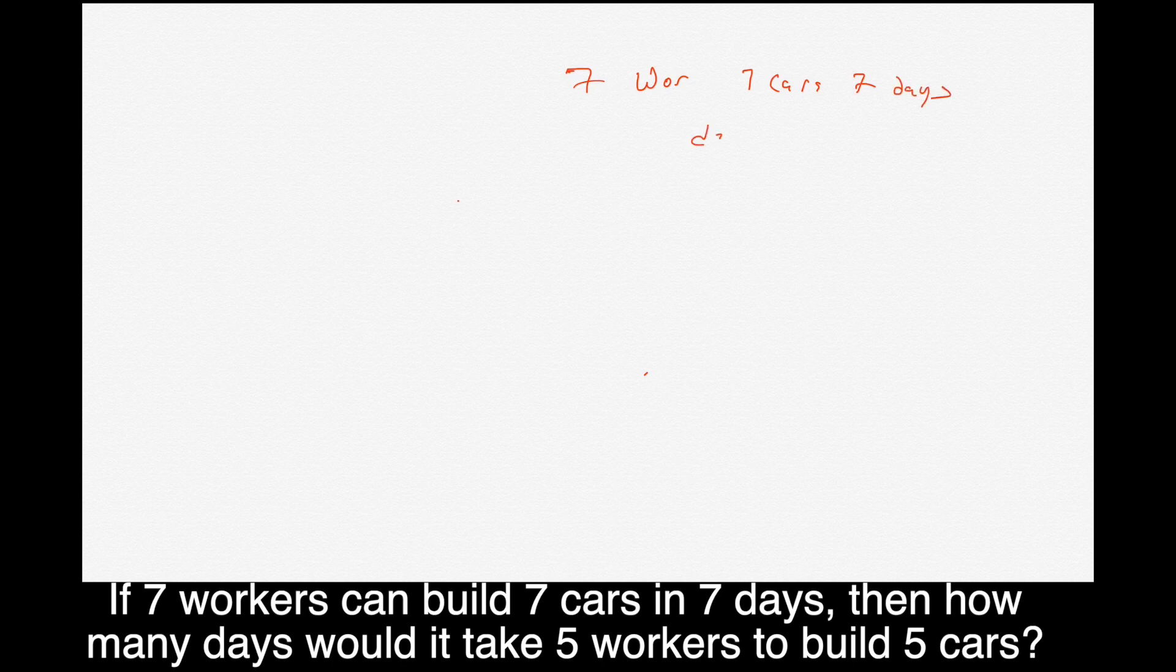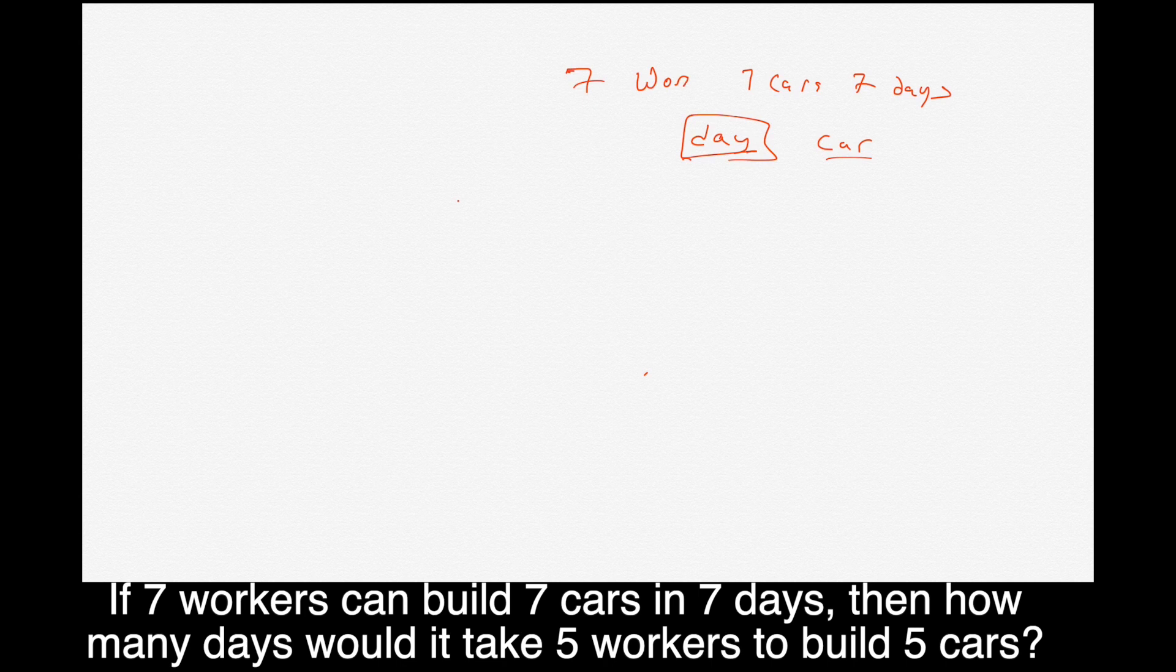I figured, a day is a unit and one car is a unit. So the bottom line is if they take seven days to build seven cars, then obviously it's one car in one day is what all seven workers are doing. One car in one day.